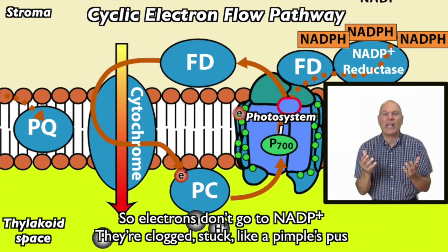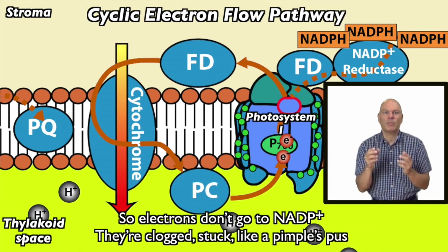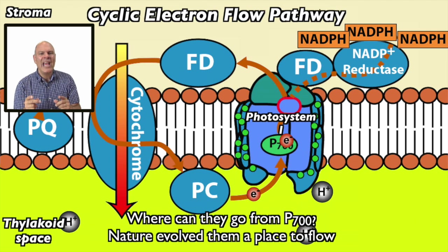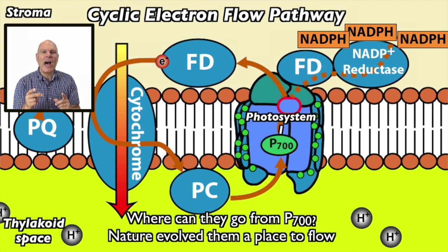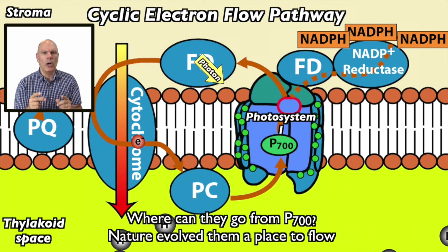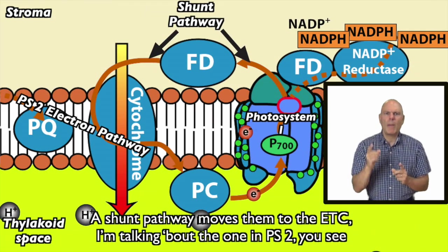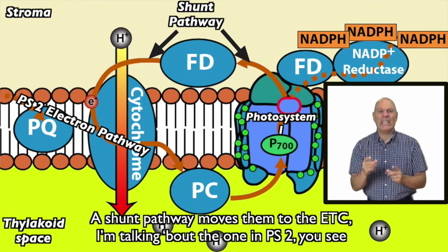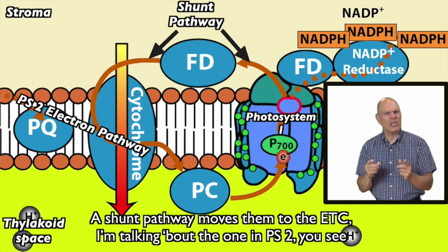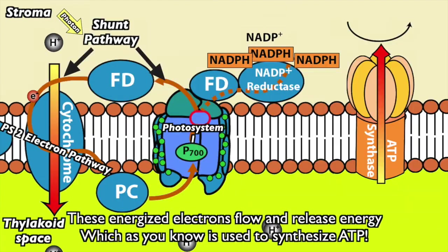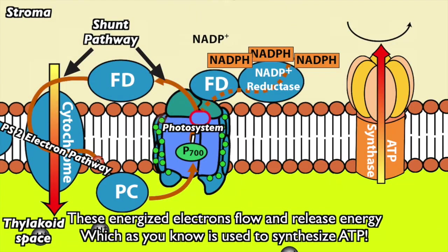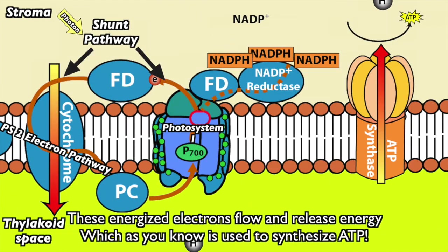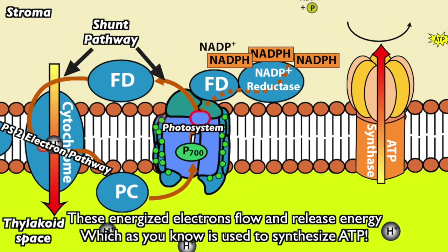They're clog-stuck. Where can they go from P700? Nature evolved them a place to flow. A shunt pathway moves them to the ETC — the one in PS2. These energized electrons flow and release energy, which as you know is used to synthesize ATP.